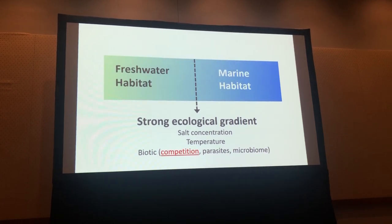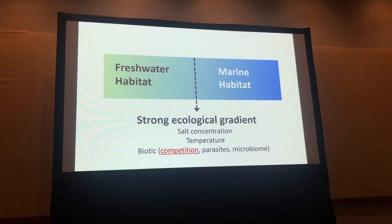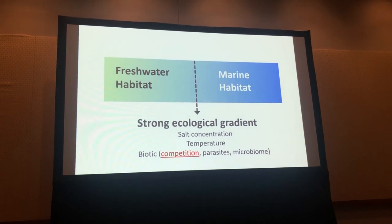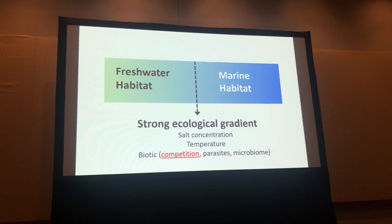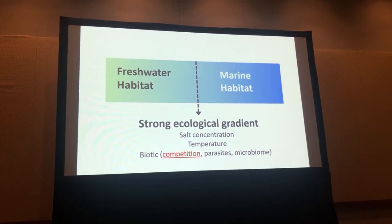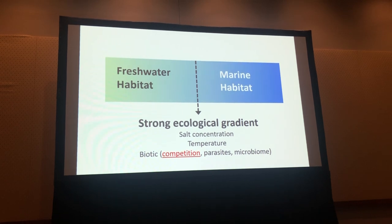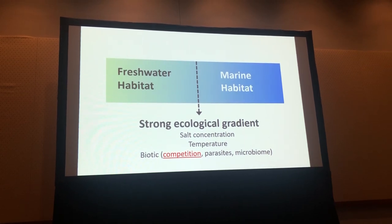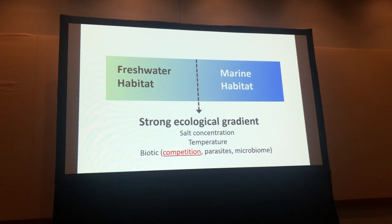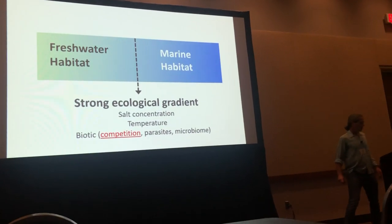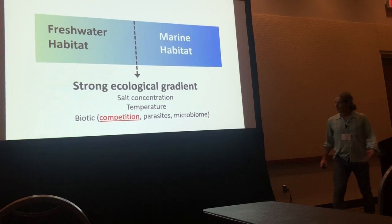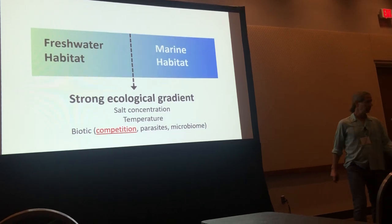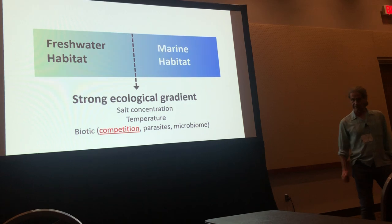The distinction between these habitats is pretty steep — actually one of the strongest ecological gradients you can possibly find in nature. It's due to parameters like salt concentration, which is obviously high in the sea and low in fresh water, temperature, and especially biotic factors such as the species present, which could be competitors, predators, or parasites. And if we go finer, we can characterize the microbiomes, which can be very different in these two environments. In fact, the greatest gradient of microbiome is between marine and freshwater habitats. To understand the effect of these gradients and transitions on fish diversity, we obviously have to start with phylogeny.